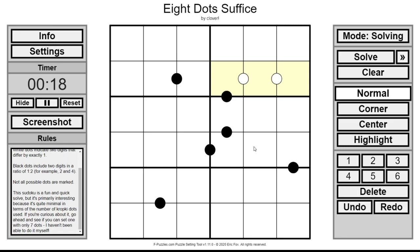Black dots include two digits in a ratio of one to two, like one, two, four would work here. Three, six wouldn't work because then the three would have to repeat.